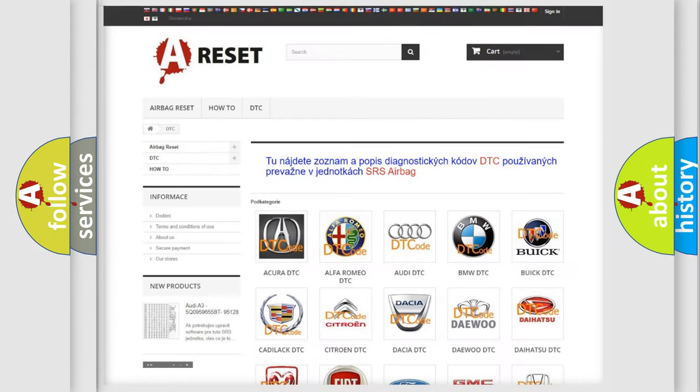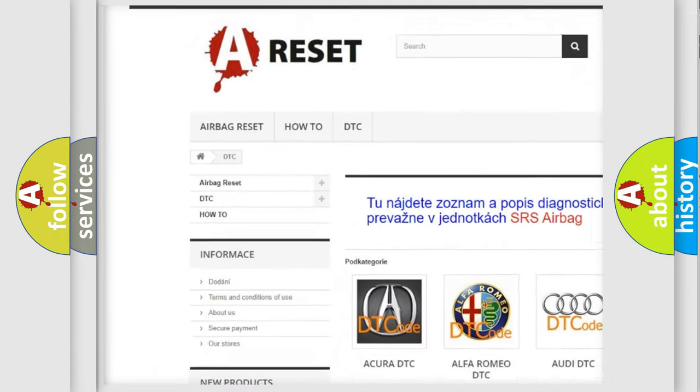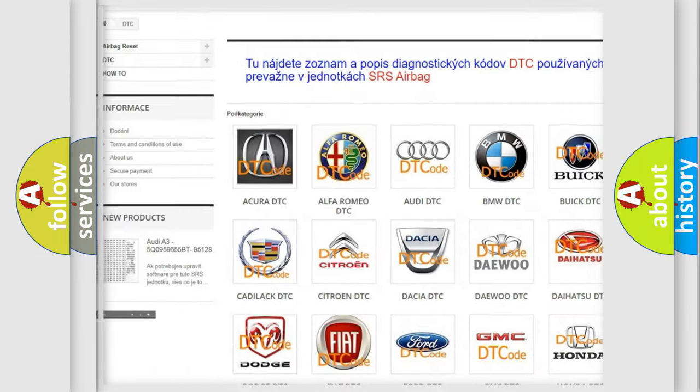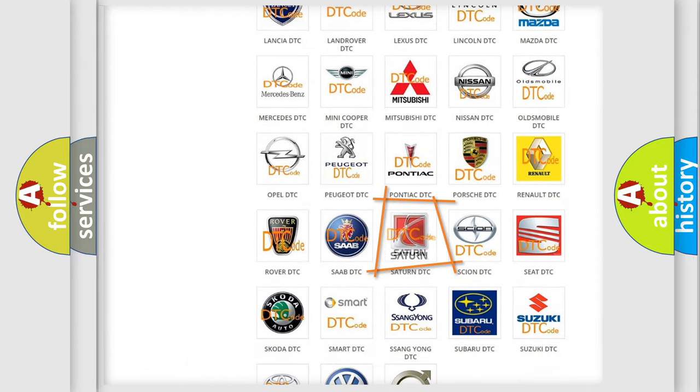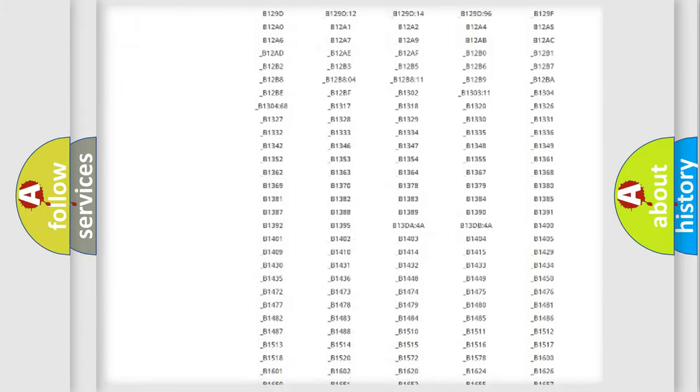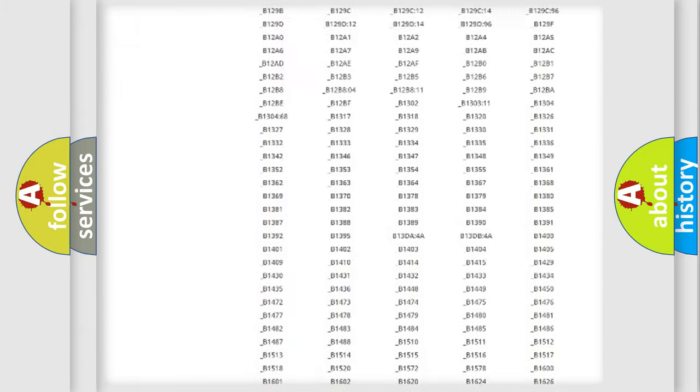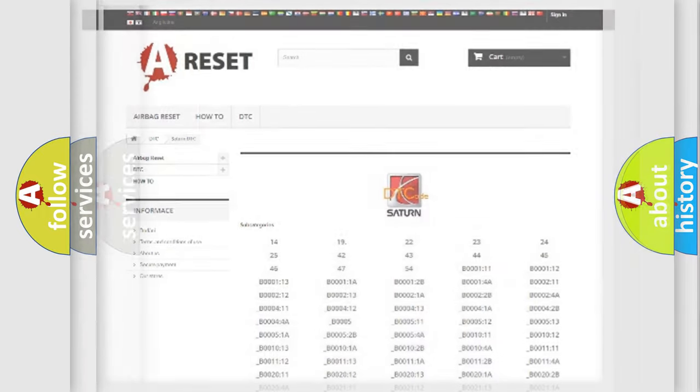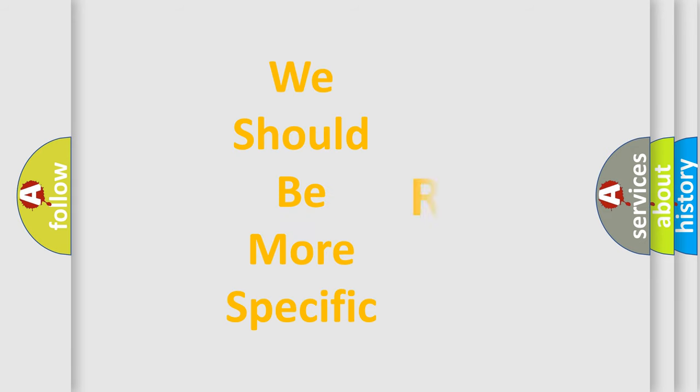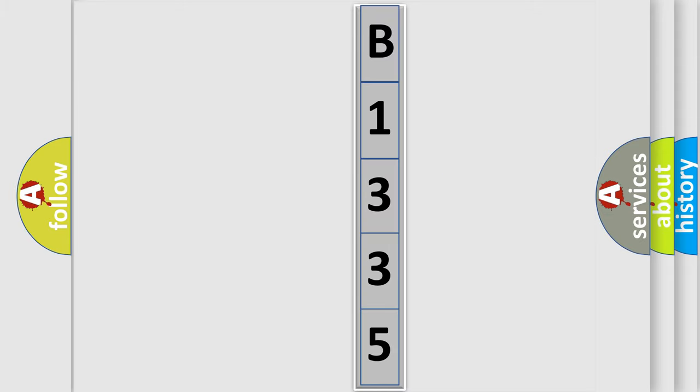Our website airbagreset.sk produces useful videos for you. You do not have to go through the OBD2 protocol anymore to know how to troubleshoot any car breakdown. You will find all the diagnostic codes that can be diagnosed in Saturn vehicles and many other useful things. The following demonstration will help you look into the world of software for car control units.